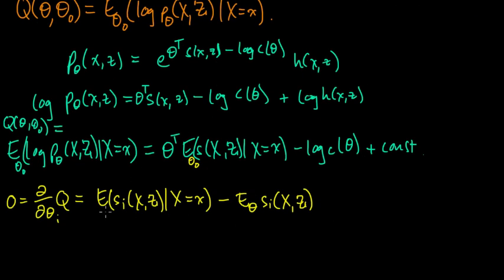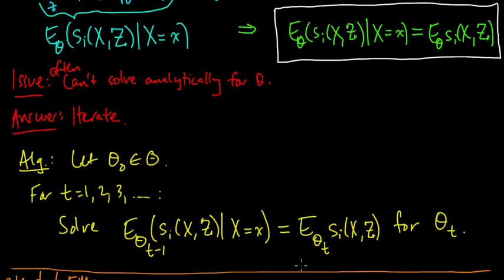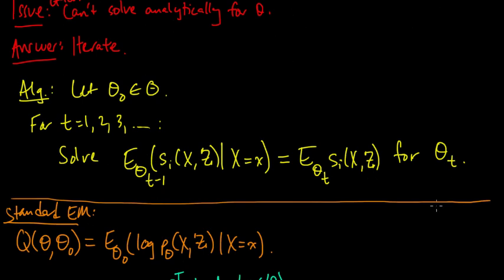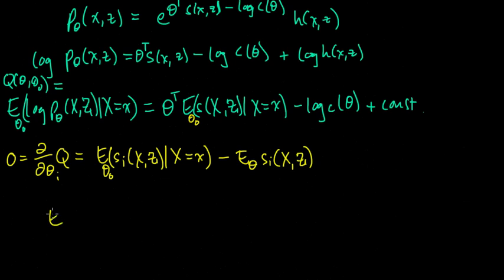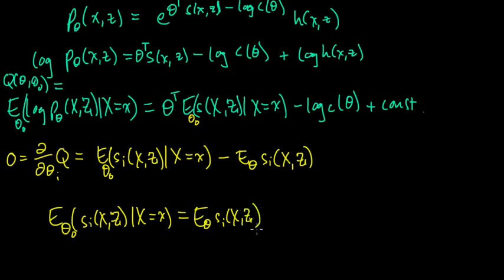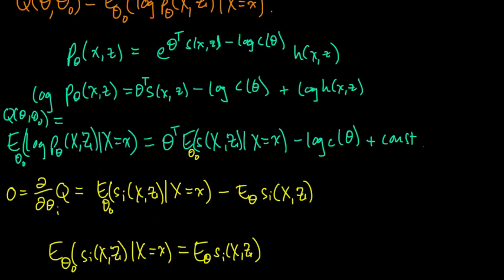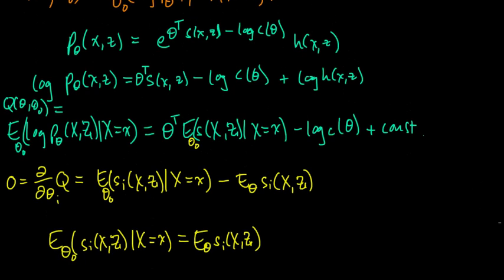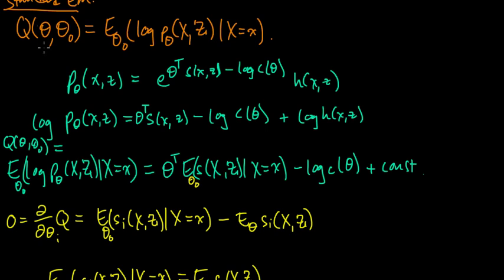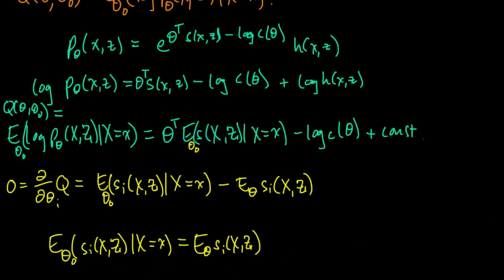This is the same iteration as the EM algorithm: the conditional expectation uses theta_{t-1}, and maximizing Q gives us the next theta_t. In EM, we maximize Q as a function of theta and make that our next theta — if theta_0 was the current iterate, theta_1 is the next. That's the general step in EM, and it's exactly the same as this procedure.